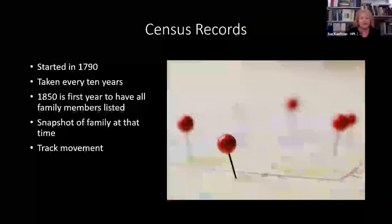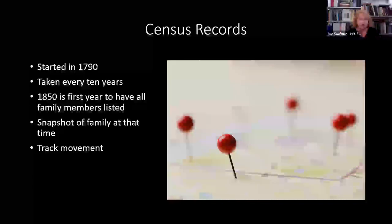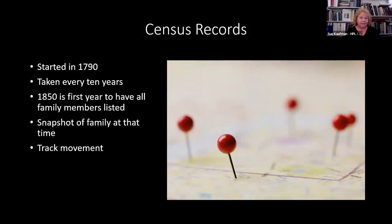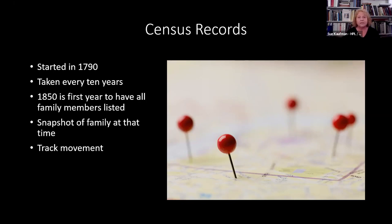The census is the first place. For those who are new, the census is a listing of names taken every 10 years, started in 1790. The first census for each state is on the zero year after it became a state — Texas became a state in 1846, so the first federal census is 1850; Illinois became a state in 1818, so the first census is 1820. Each census lists different things and is a snapshot of the family at that time. If you are looking for a child, you will be looking for the maiden name of your ancestor, not the married name. It's also a way to track movement.